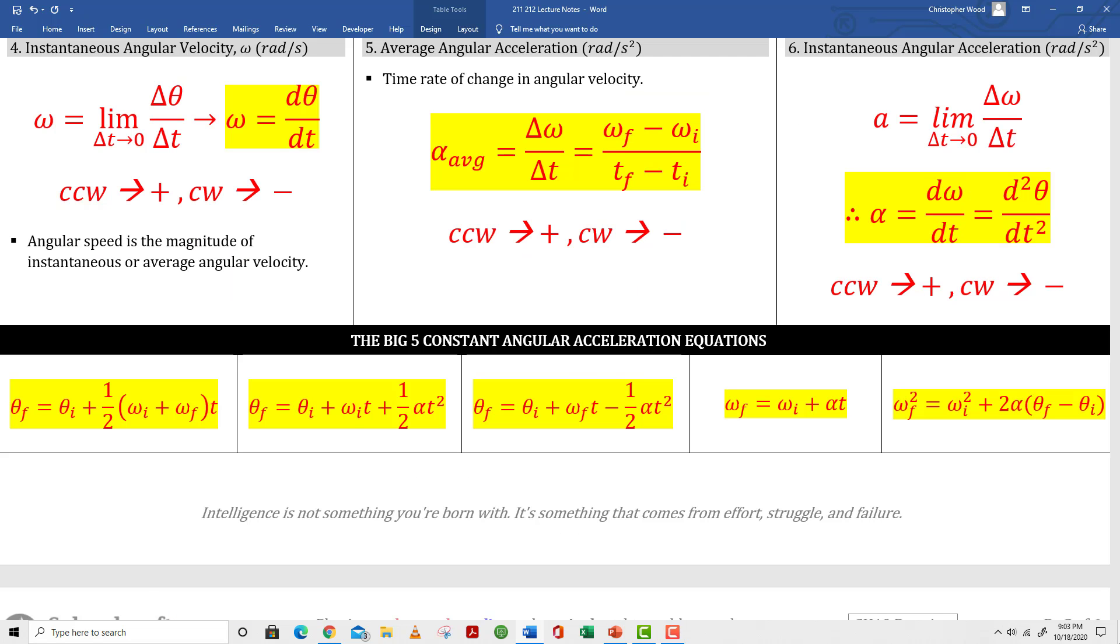Boxes 4, 5, and 6 describe instantaneous angular velocity, average angular acceleration, and instantaneous angular acceleration. Once again, you've seen all this before. Now you're looking at the rotational version.